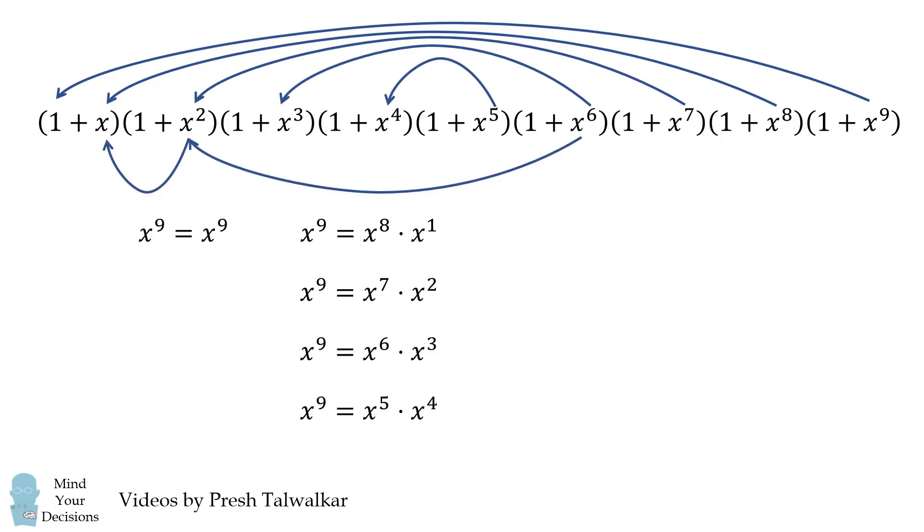What about 3 terms? One way is 6 plus 2 plus 1. Another way is 5 plus 3 plus 1. And a final way is 4 plus 3 plus 2. There's no other way to get to a power of 9.